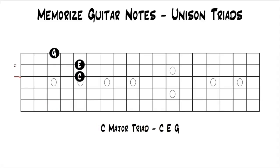It'll sound a little different because the string gauges make them sound a little different. Also, the intonation of your guitar can make it sound a little different. But for the most part, if I was to play one chord in one spot and then play the exact same chord with all unison notes, it's going to sound the same — unlike playing a chord and moving it to a different octave, which is going to sound a lot different.